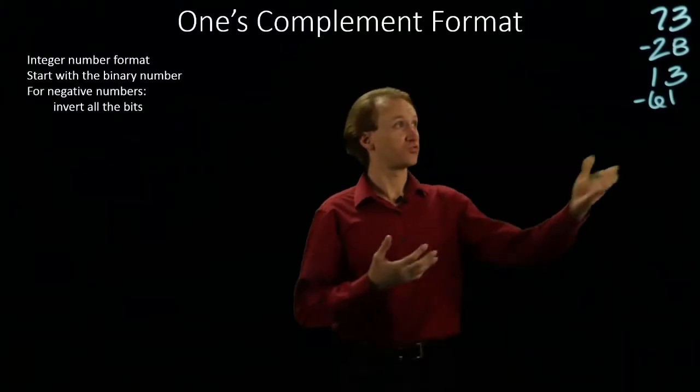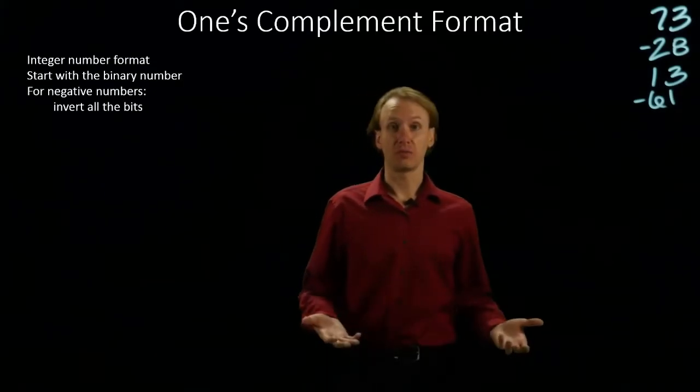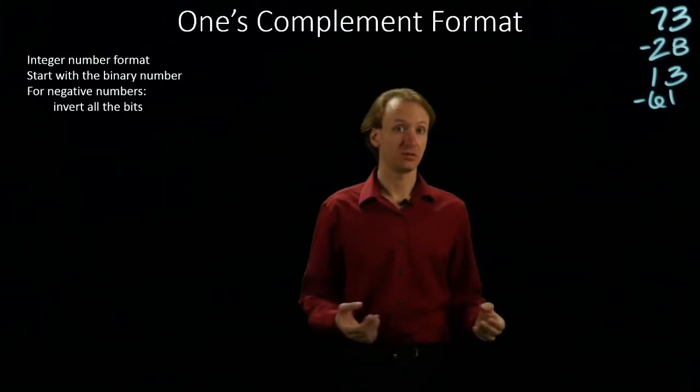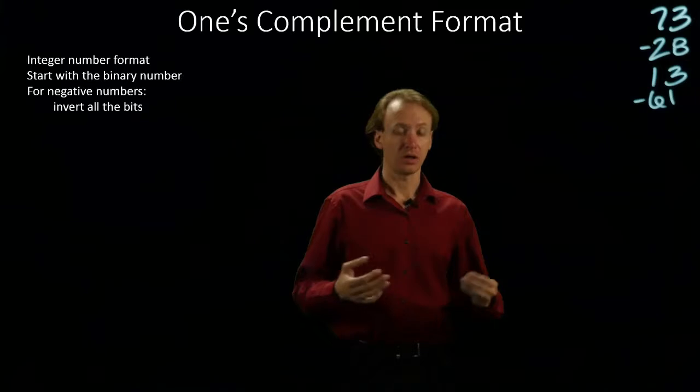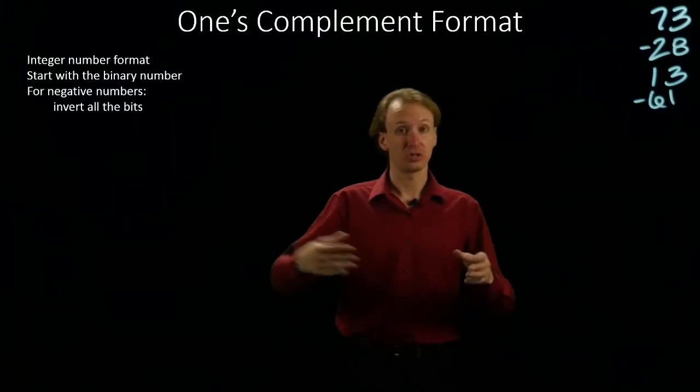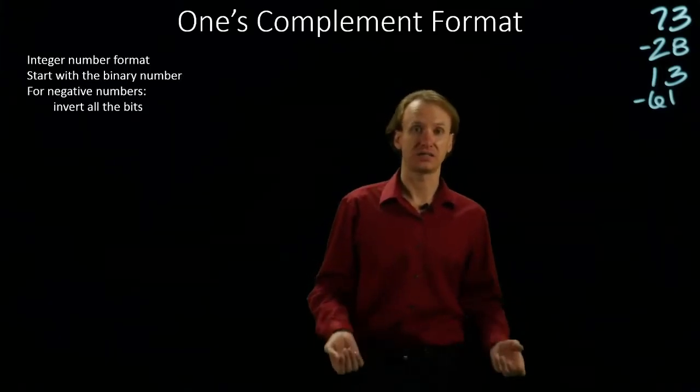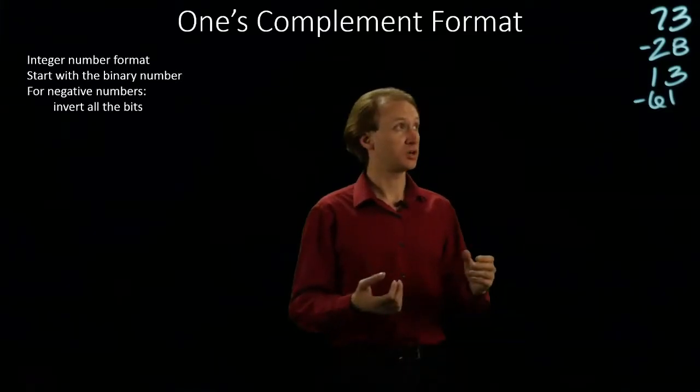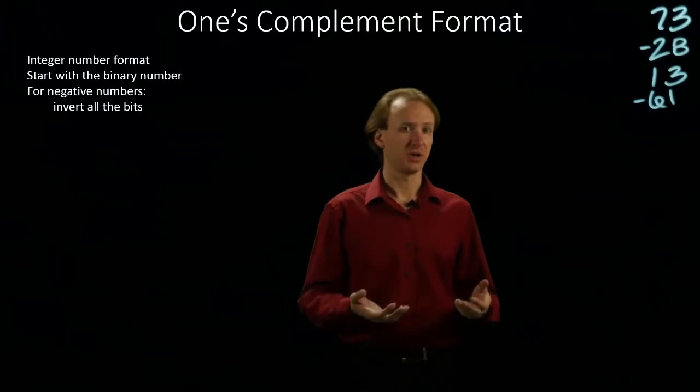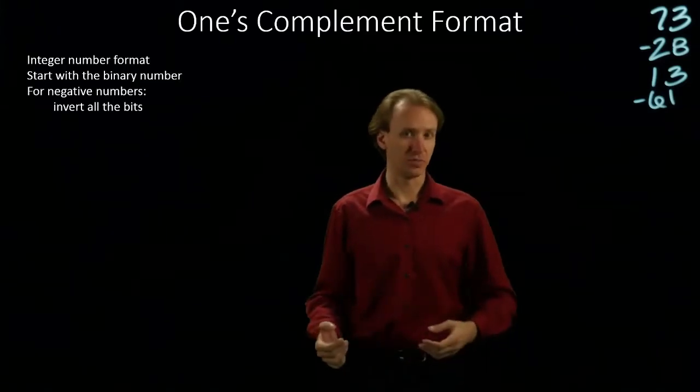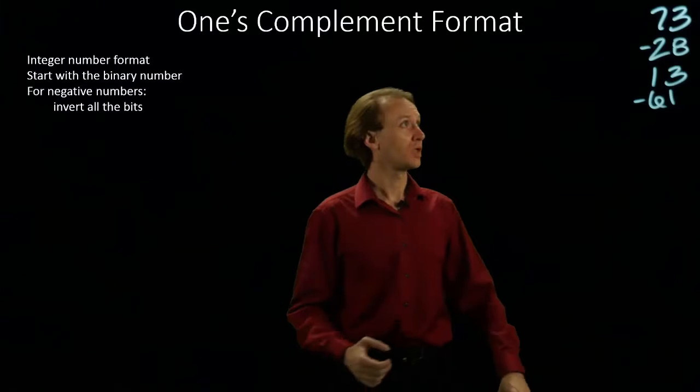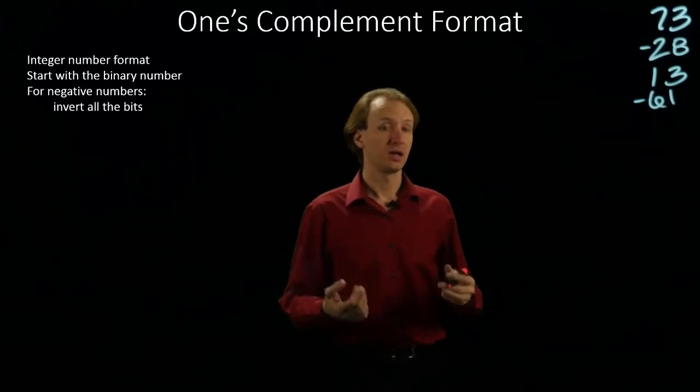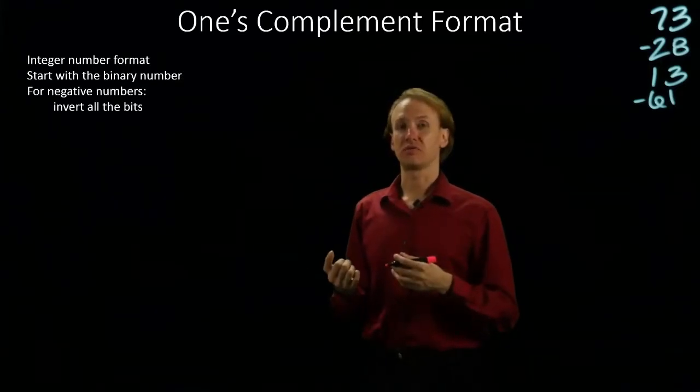This time, I'm going to convert these four numbers into one's complement format. And again, I'm going to limit myself to a 16-bit representation. A 32 or 64-bit representation would just have more bits on the left-hand side. They look identical to whatever bits we're generating anyway, so we won't really see much of a difference if we did have 32 bits. Since these are all decimal numbers, I'm going to start by converting them into binary, and then I'll put them into the one's complement format.